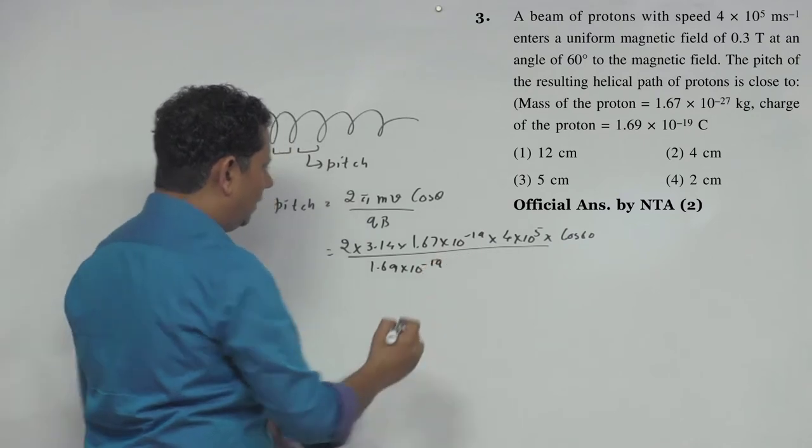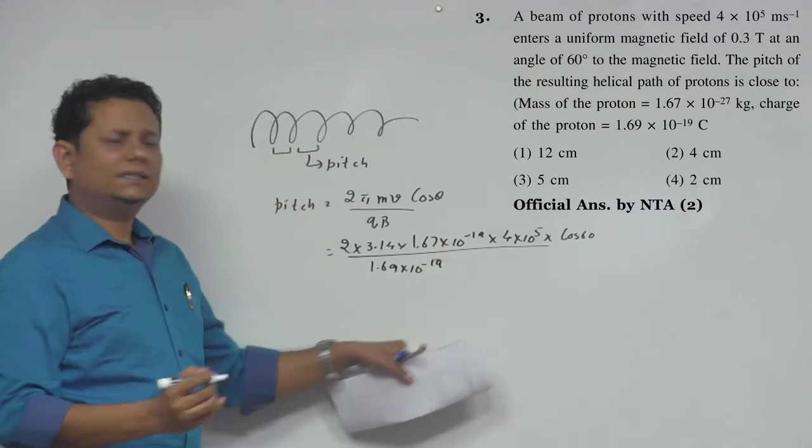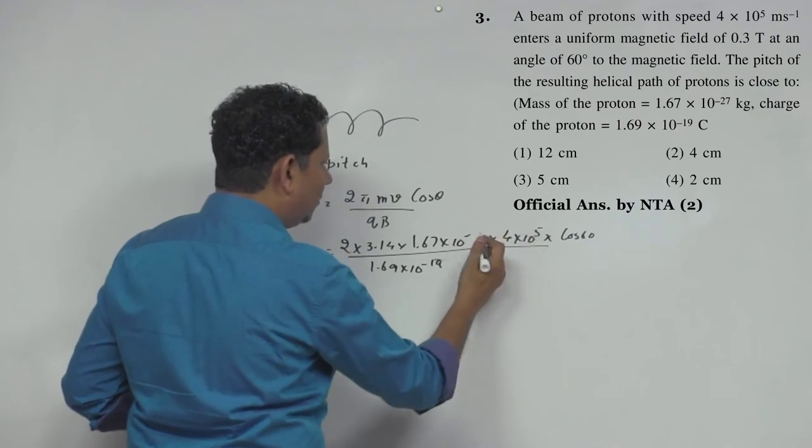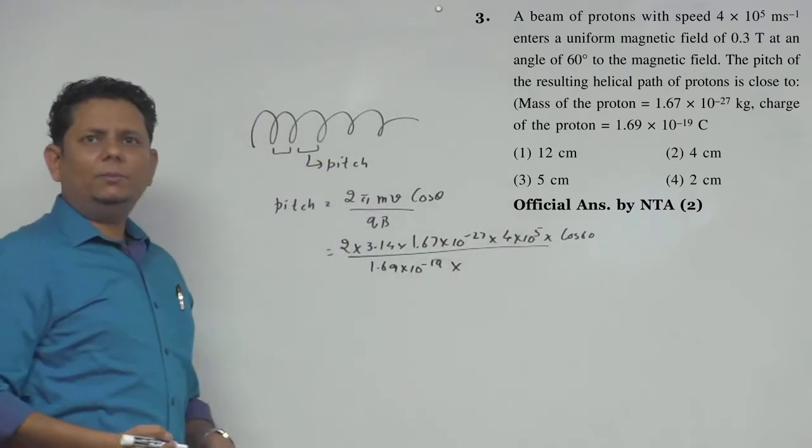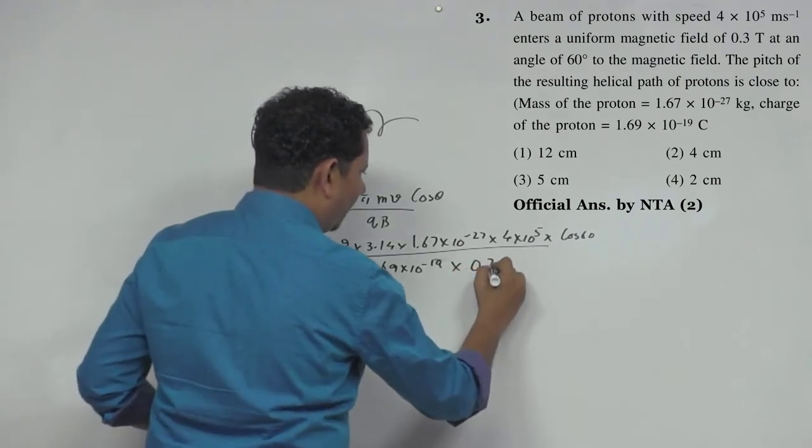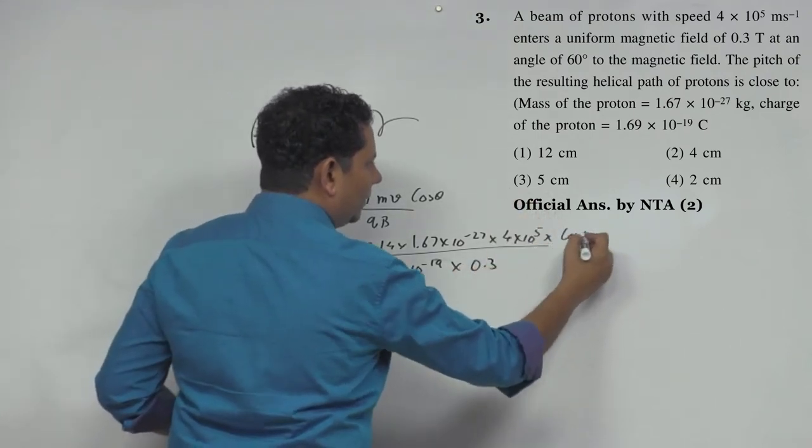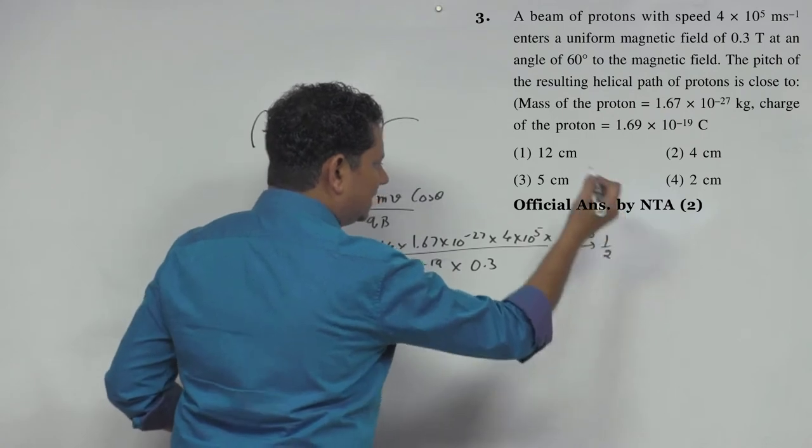Let me correct - mass is 1.67×10⁻²⁷. B is given as 0.3. Now cos 60, we know that cos 60 equals one-half.